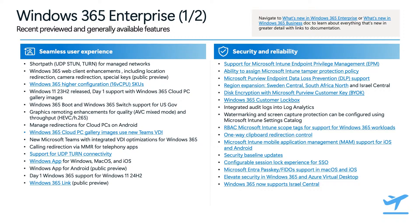With these and the other security investments we are making, we want to make sure that all your investments in Microsoft 365 security just work out of the box with Windows in the cloud. On the access control side, we released Intune scope tags for Windows 365 for iOS and Android, with other platforms soon to follow. We also released Entra Passkey and FIDO support on macOS and iOS, with other platforms following soon. Support for Intune endpoint privilege management and tamper protection policies round out our latest developments in this space, along with the recent release of mobile application management across platforms.